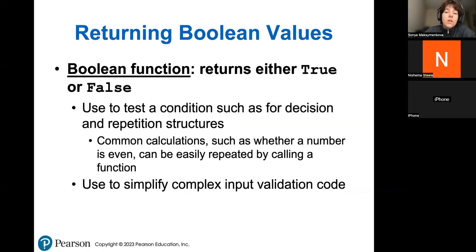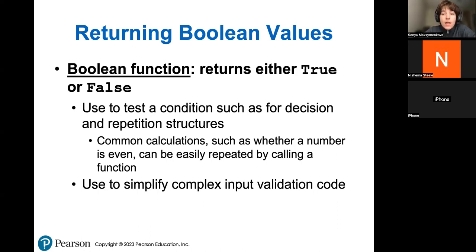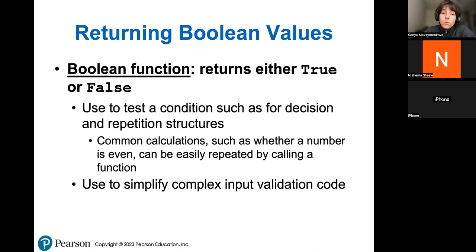Boolean functions — just a quick recall. A Boolean function returns either true or false — only two things you can return. Those are useful for loops whenever you need to check if a condition is true or false within your loop. Also for calculations — if you need to check if a number is even or odd, even can be true, odd can be false. Basically, whenever you need to validate something such as user input or check if a condition is met, you use a Boolean function that will tell you true — the input is good, you can proceed — or false — the input is not good, ask the user again.